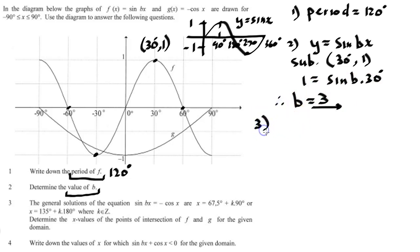Question number 3. The general solutions of the equation sin bx = -cos x. So they're equating both of those graphs. They're giving us the answers of the general solution. They're telling us that it's x = 67.5° + k×90° or x = 135° + k×180°, where k ∈ Z means k can be any integer value.